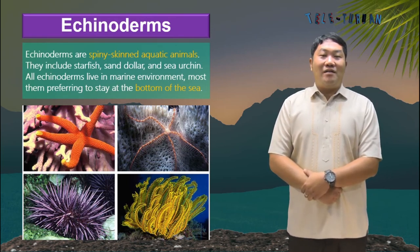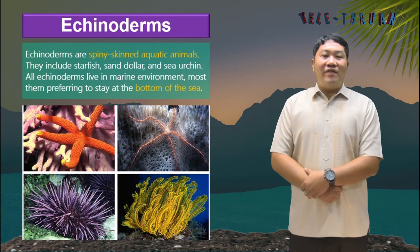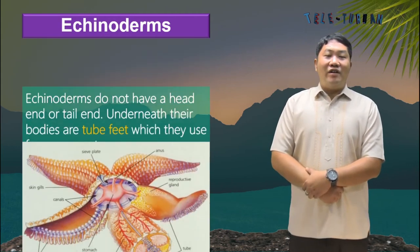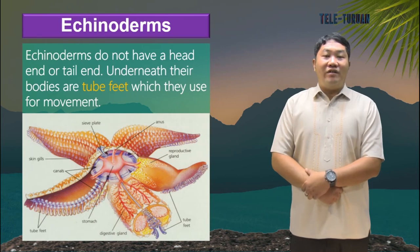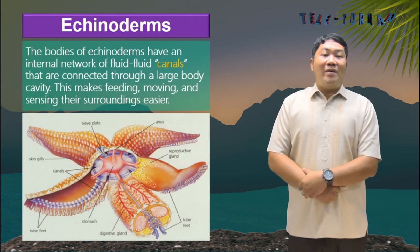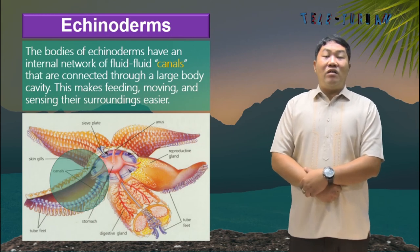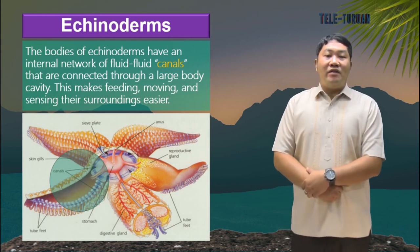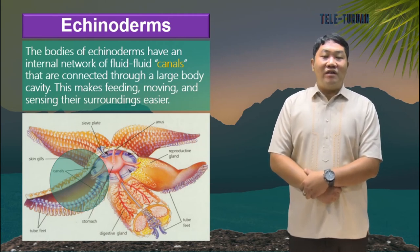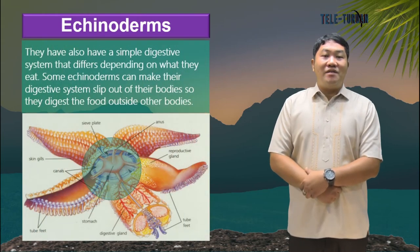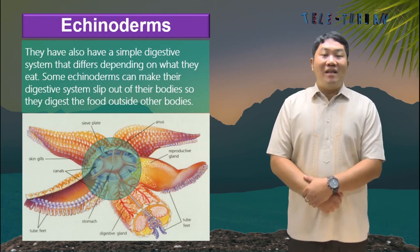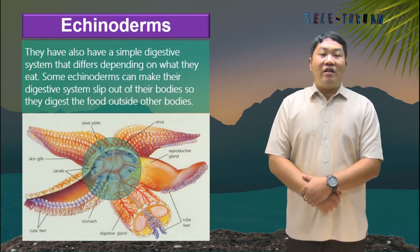Echinoderms are spiny-skinned aquatic animals. They include starfish, sand dollars, and sea urchins. All echinoderms live in a marine environment, most preferring to stay at the bottom of the sea. Echinoderms do not have a head end or tail end. Underneath their bodies are tube feet, which they use for movement. Their bodies have an internal network of fluid-filled canals connected through a large body cavity, making feeding, moving, and sensing their surroundings easier. They have a simple digestive system that differs depending on what they eat, and some echinoderms can push their digestive system outside their bodies to digest food externally.